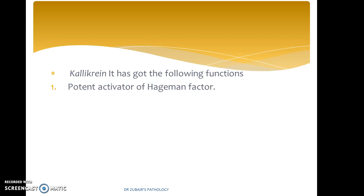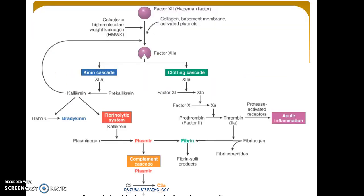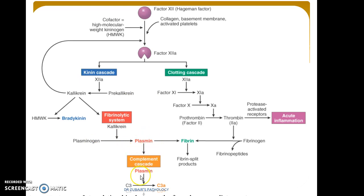Callicrein has the following functions: it is a potent activator of Hageman factor with chemotactic activity, and directly converts C5 to the chemoattractant C5a. These systems are not mutually independent — what connects them is Factor 12, Hageman factor. It activates the kinin cascade and the clotting cascade. Callicrein acts on plasminogen and causes the activation of plasmin, which is linked with the complement cascade.